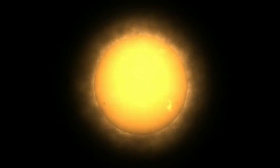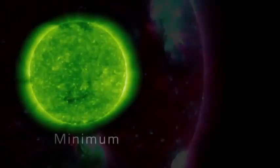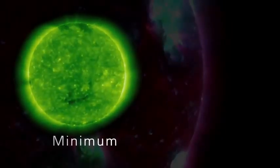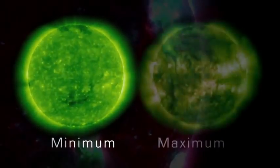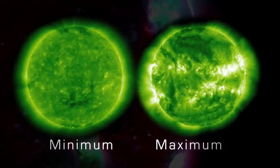During one cycle, the number of sunspots, a good indicator of solar activity, goes from low to high and back down to low. Solar minimum represents a period when sunspot numbers are relatively low, and solar maximum represents a period when sunspot numbers are relatively high.